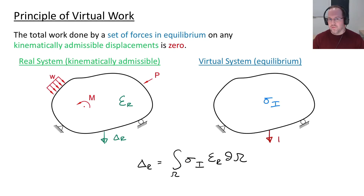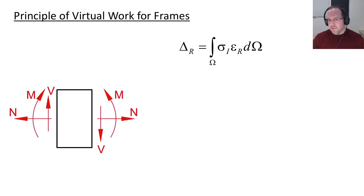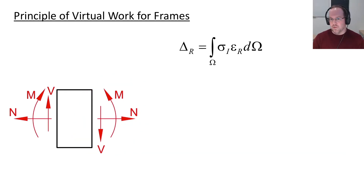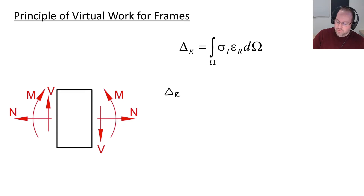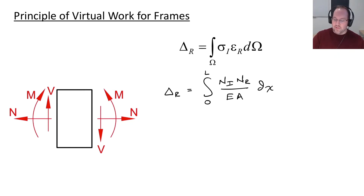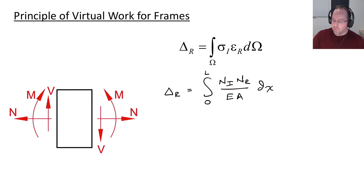We've seen how to apply this for trusses — let's expand that concept to beams and frames. The main difference is that we're going to have three different internal forces, each of which could contribute to displacements. We'll have an axial term, a shear term, and a moment term. Adding all three together, starting with the axial term: an integral from 0 to L of N_i times N_r divided by EA dx, where E is the elastic modulus, A is the cross-sectional area, and N_i and N_r are the axial forces for the virtual and real systems respectively.